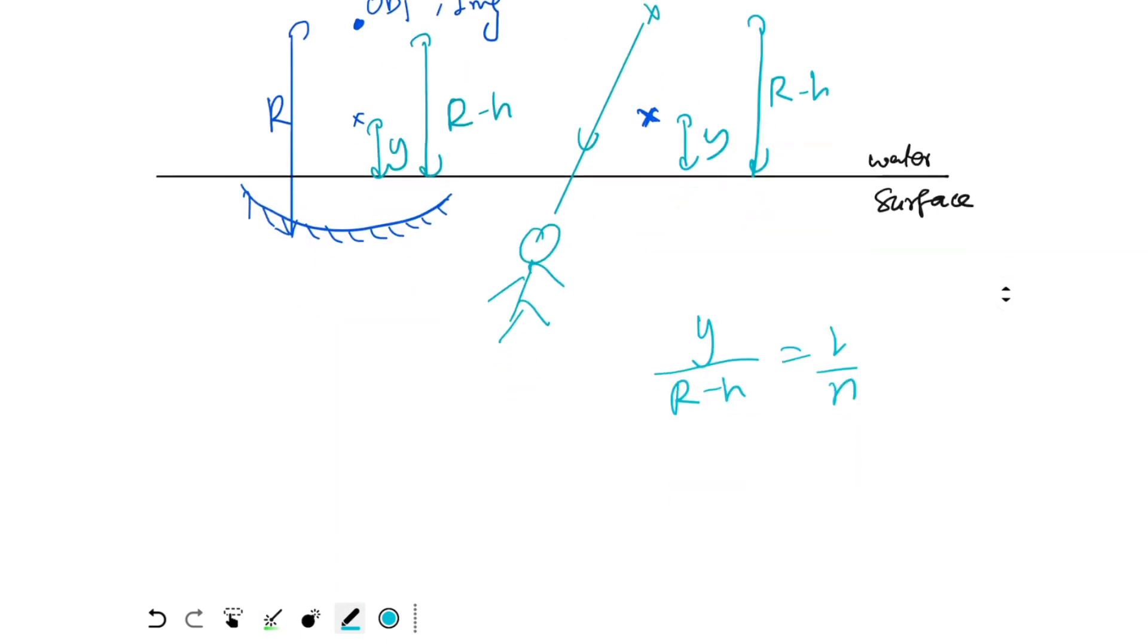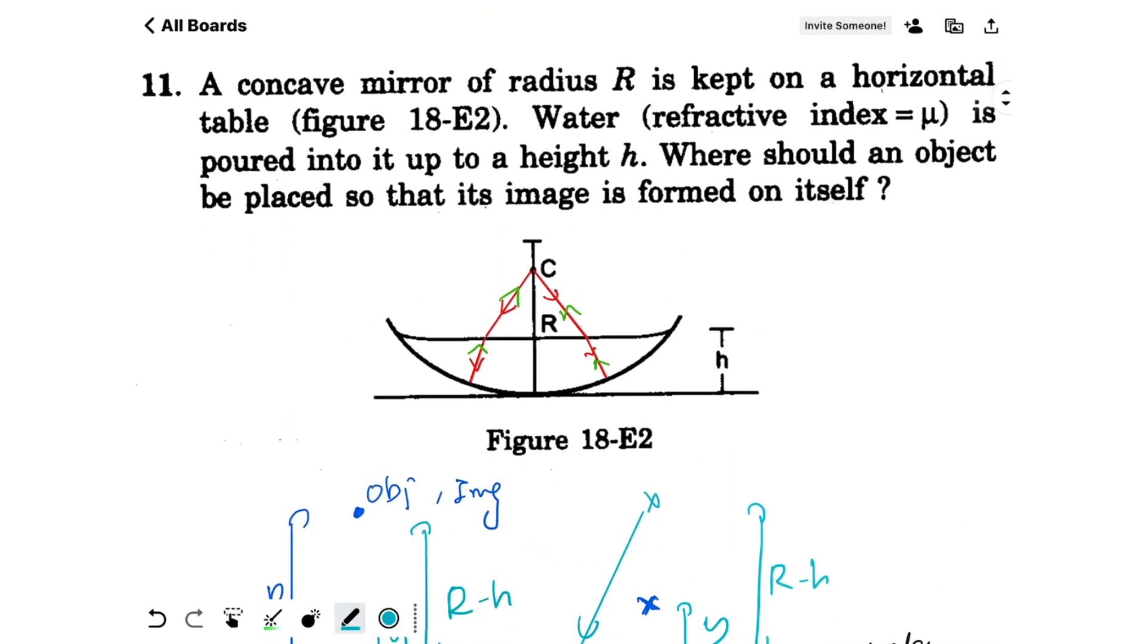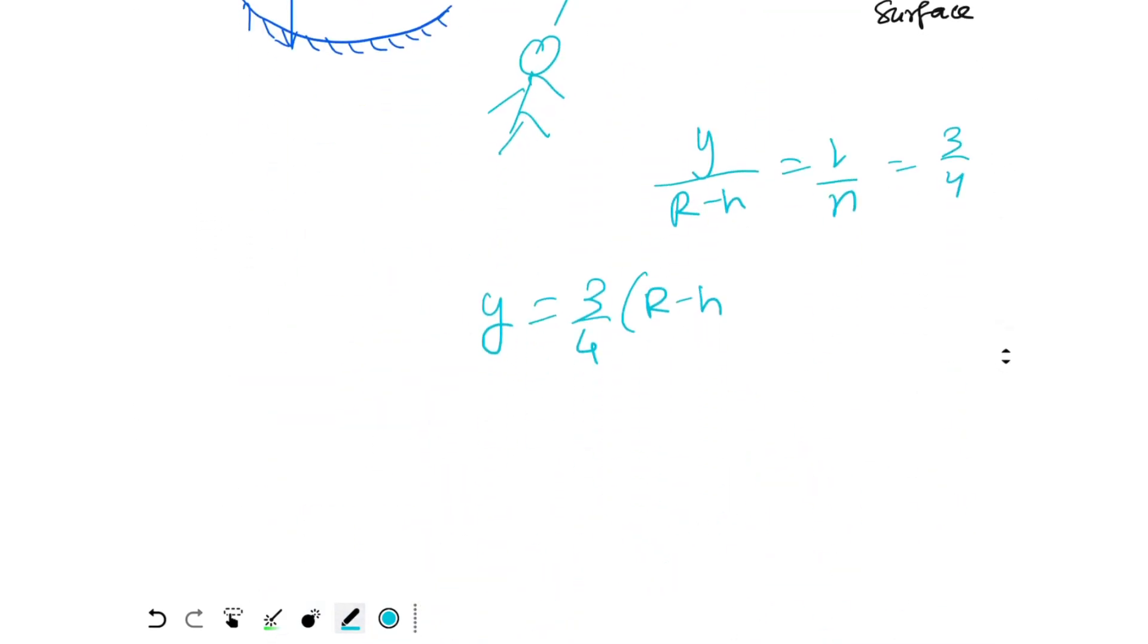The refractive index of water is 4 by 3, so this is equal to 3 by 4 in this case. So y will be equal to 3 by 4 times r minus h. And the value of r and h is not given, so we'll just keep it up to this. So this will be your answer.